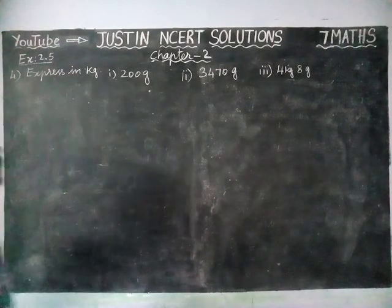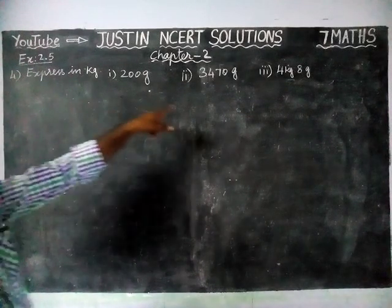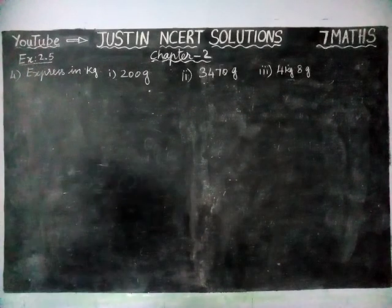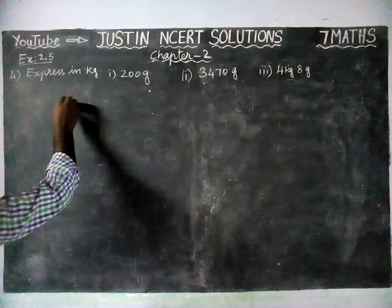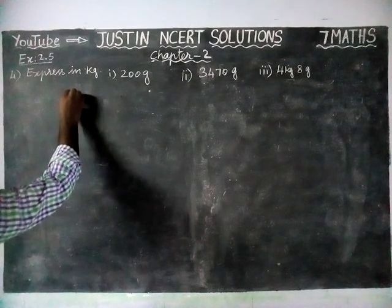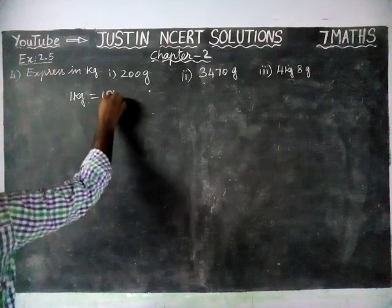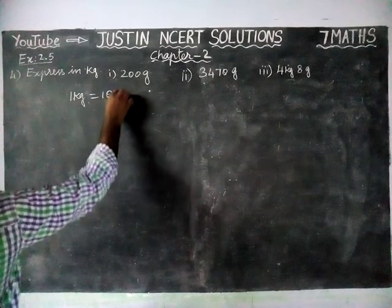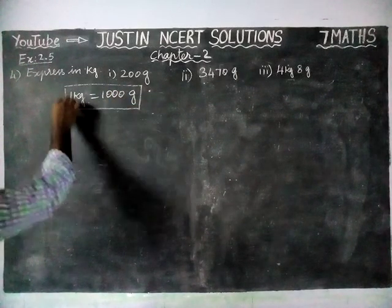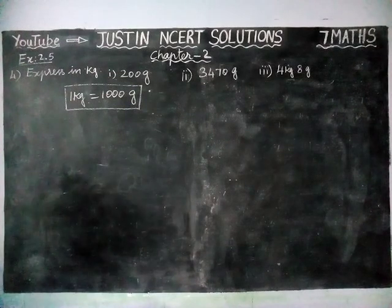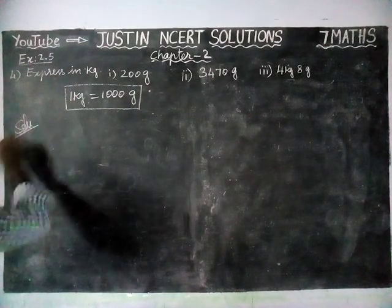Here they have given: express in kilograms. They have given values in grams and we have to convert into kilograms. Before going to the sum, we will write that 1 kilogram is equal to 1000 grams. Now we are going to find the answers.